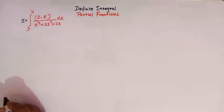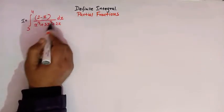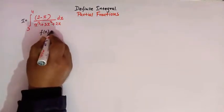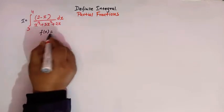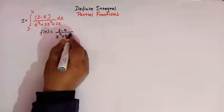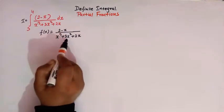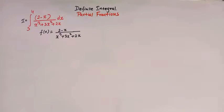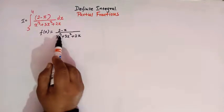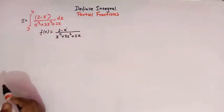Let us first call this integral as I. Here we see that our integrand is a rational function. So let us denote the integrand by f(x) which is (2 minus x) over (x cubed plus 3x squared plus 2x). Here the numerator and the denominator both are polynomial functions. This is a rational function. Moreover, the degree of the denominator is 3 and the degree of numerator is 1.